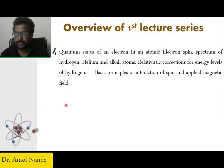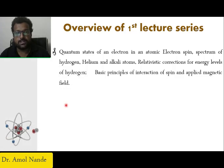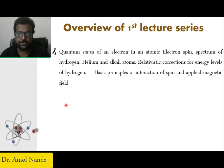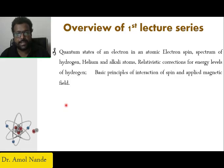Overview of the first lecture series: we will split our lecture series into four portions. The first portion we will try to cover at least three to four lectures. In the second one we will discuss more about atomic physics and laser coefficients. The last two lectures will be dedicated to molecular physics. In this lecture series we will see a quantum state of an electron in an atomic spin, spectrum of hydrogen, helium and alkali atoms.